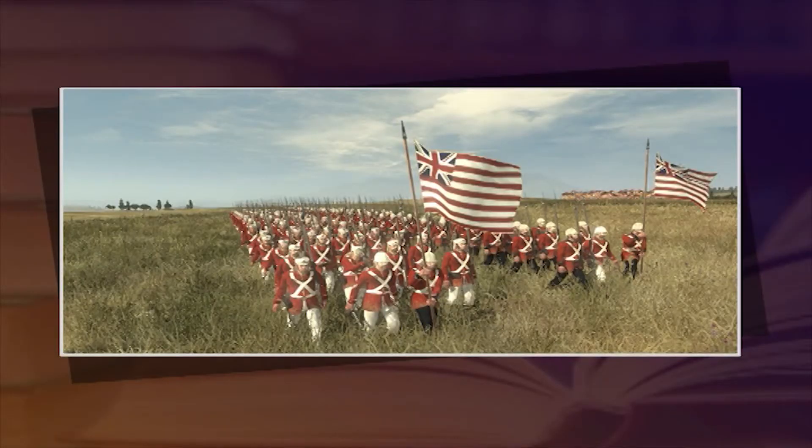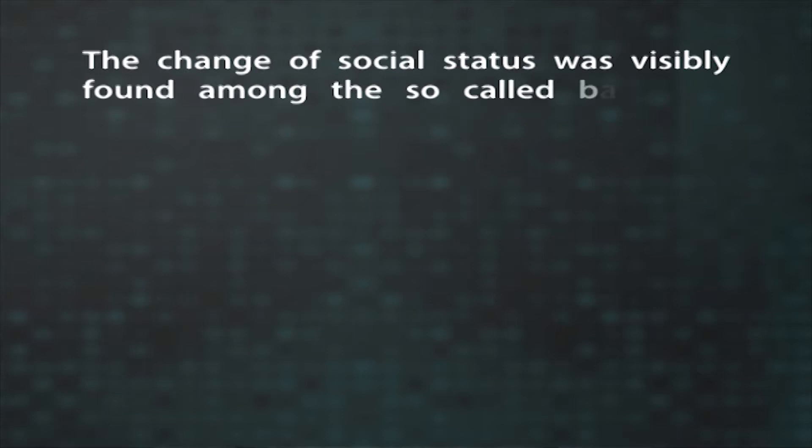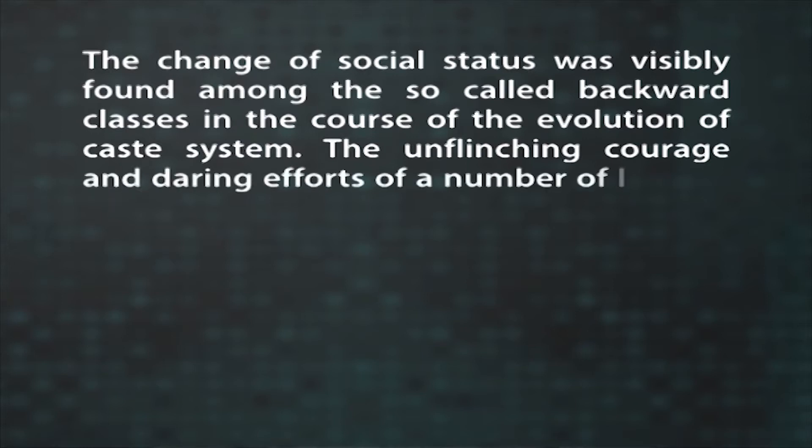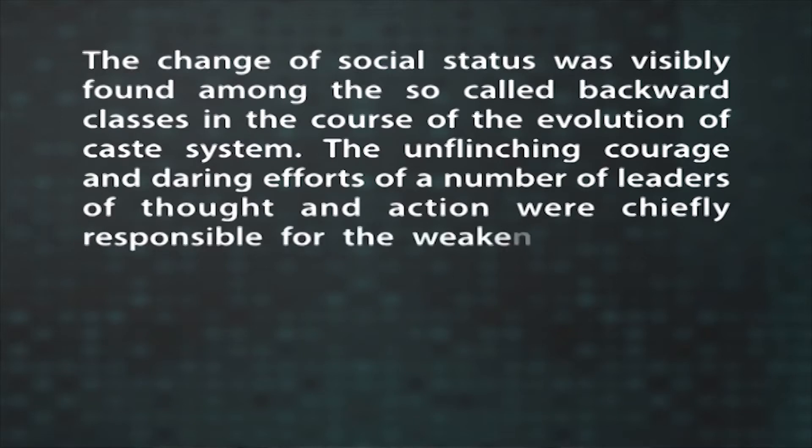Till the advent of British rule, the high castes enjoyed high status in the caste hierarchy. But gradually, the caste structure started showing signs of decay and disintegration. With rapid industrialization of the country, there was further change in the caste rules in India. The establishment of a common British law throughout the country undermined the integrity of the caste structure. Warnings were given to all education institutions that encouraged segregation. The newly educated sections who were denied the benefits of education for ages felt the need for improving the social status of their communities. The unfringing courage and daring efforts of a number of leaders of thought and action were chiefly responsible for the weakening of the caste system.